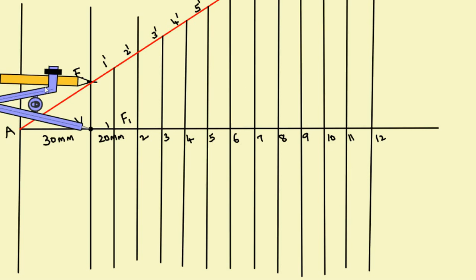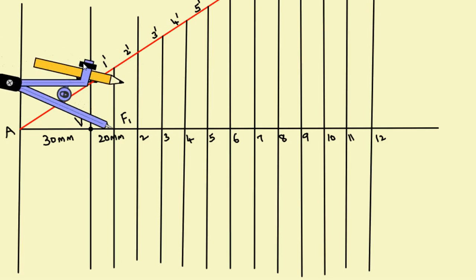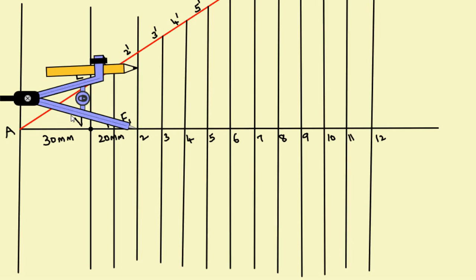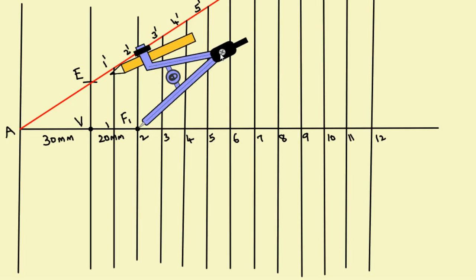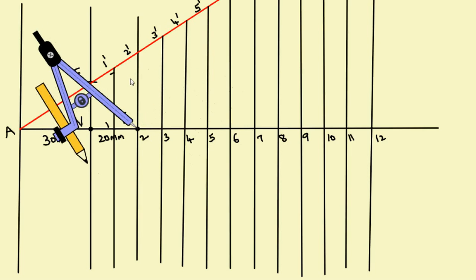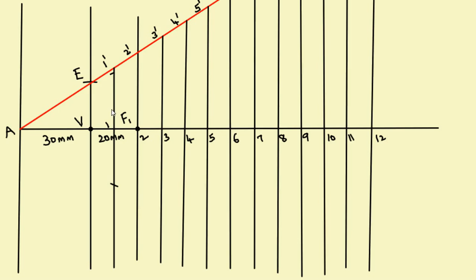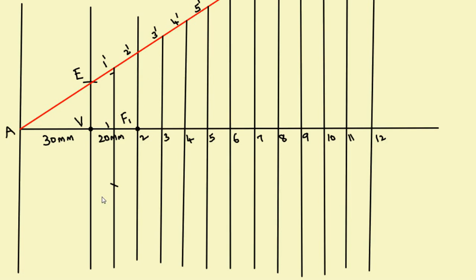Now take the compass and measure the distance from 1 to 1 dash. With that measurement, keep the compass at F1 and cut an arc on the line 1–1 dash — one on top and one on the bottom. Name these intersection points P1 and P1 dash.